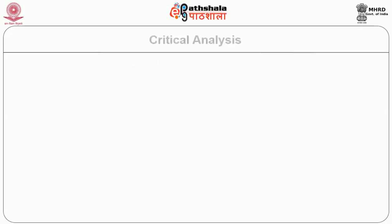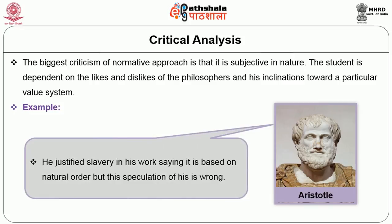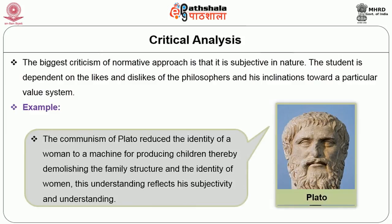The biggest criticism of the normative approach is that it is subjective in nature. The study is dependent on the likes and dislikes of the philosophers and their inclinations toward a particular value system. For example, Aristotle justifies slavery in his own work, saying it is based on natural order — but this speculation might appear absolutely absurd to a mind of this day. The communism of Plato reduced the identity of a woman to a machine for producing children, thereby demolishing the family structure and the identity of women. This understanding reflects his subjectivity.